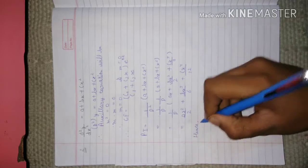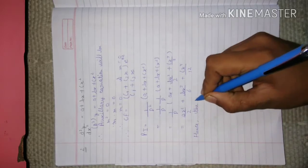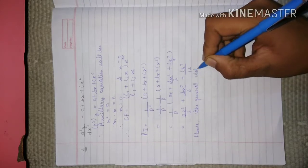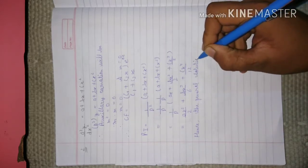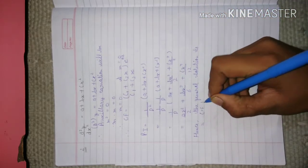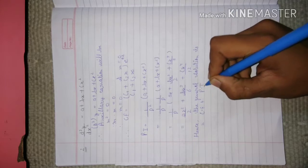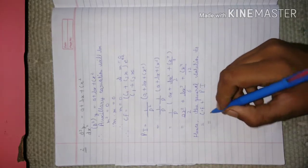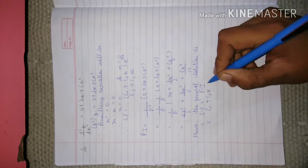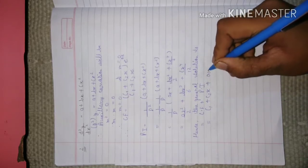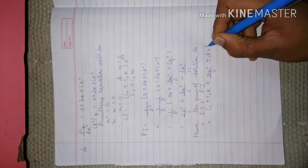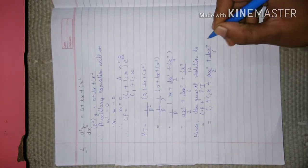Hence, the general solution is CF + PI, that is c1 + c2x + ax²/2 + bx³/6 + cx⁴/12.